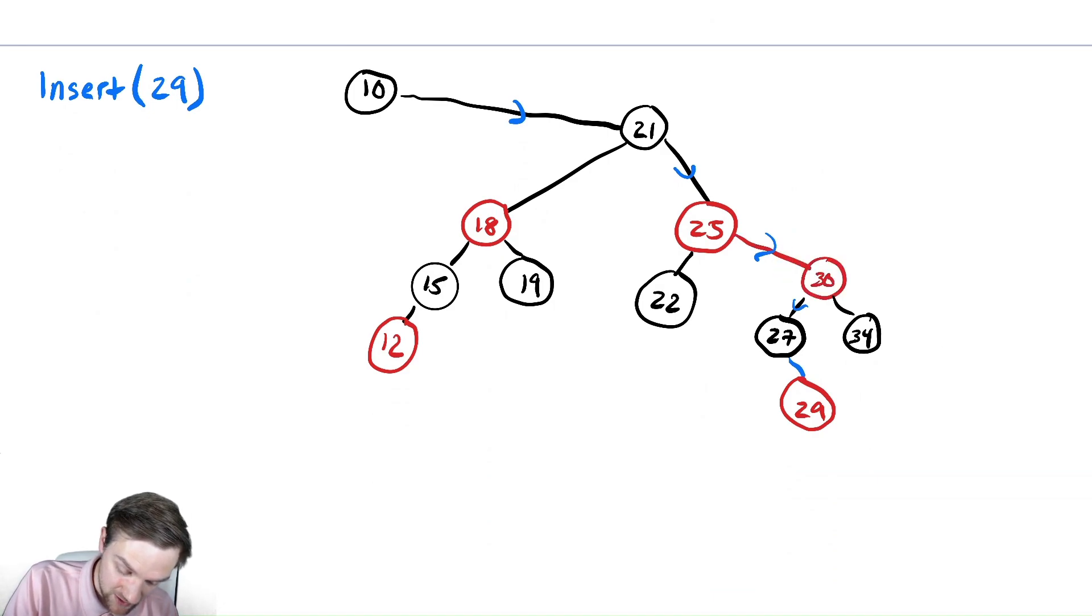So maybe we need to recolor this branch here. Let's do that. That branch should be black. And then we're going to promote, this was originally our node Z. We're going to get rid of that and try and do that with this new node Z, which will update to be the grandparent of the original, which was 30.